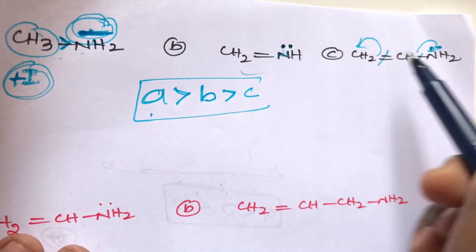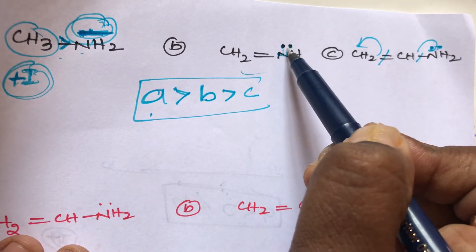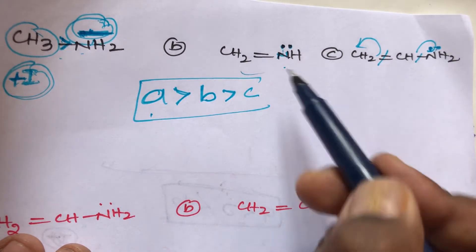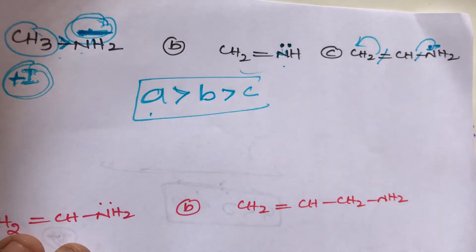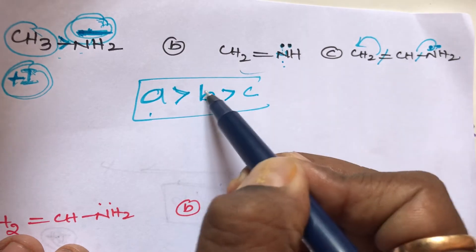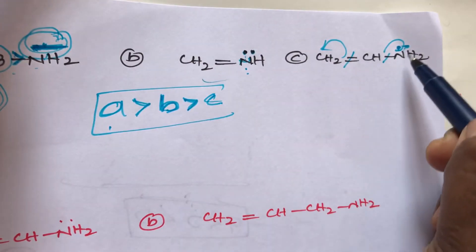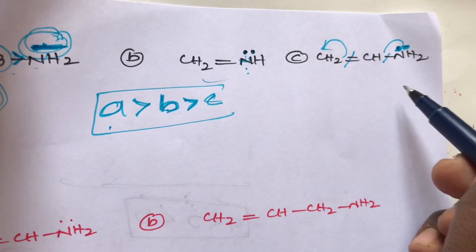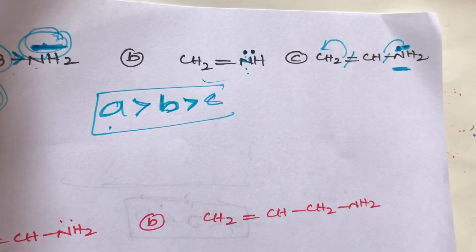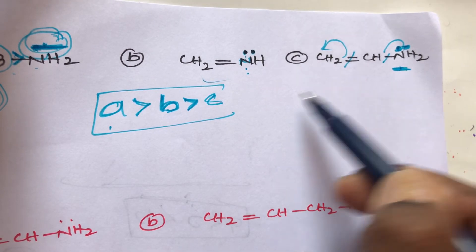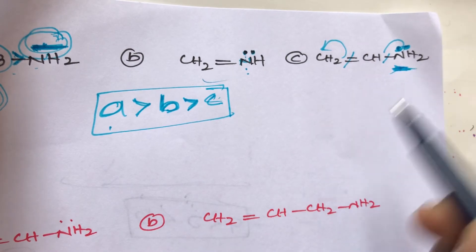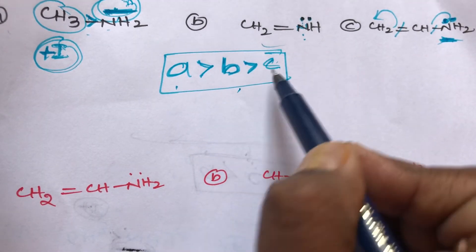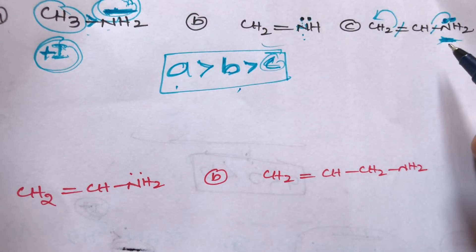Compound B also has a lone pair on nitrogen, and compound C also has one lone pair. In compound B, that lone pair does not participate in any resonance, so B is more basic than C. In compound C, the lone pair is involved in resonance and completely disappears, so C has no density on nitrogen — C is the least basic. Final order: A > B > C.